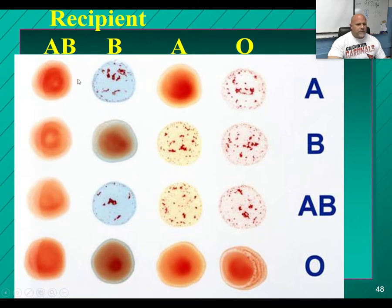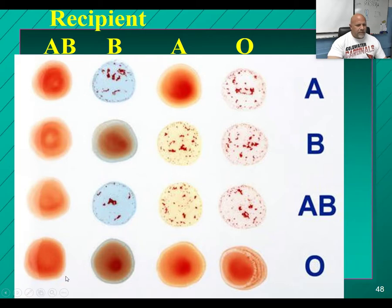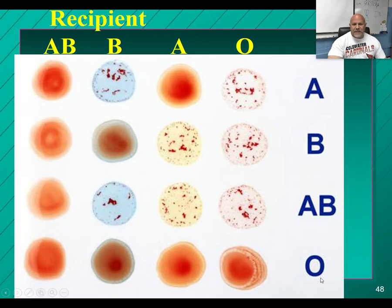A type A person would also cause type B blood to clot. Type B can't donate to anybody but B or AB. Notice AB never has a problem because they don't produce any antibodies, so no matter what blood they get, it doesn't matter — they're not going to clot it up. Type O can donate to everybody without a problem because they don't have any surface antigens, so anybody else's antibodies won't see anything and they never clot.